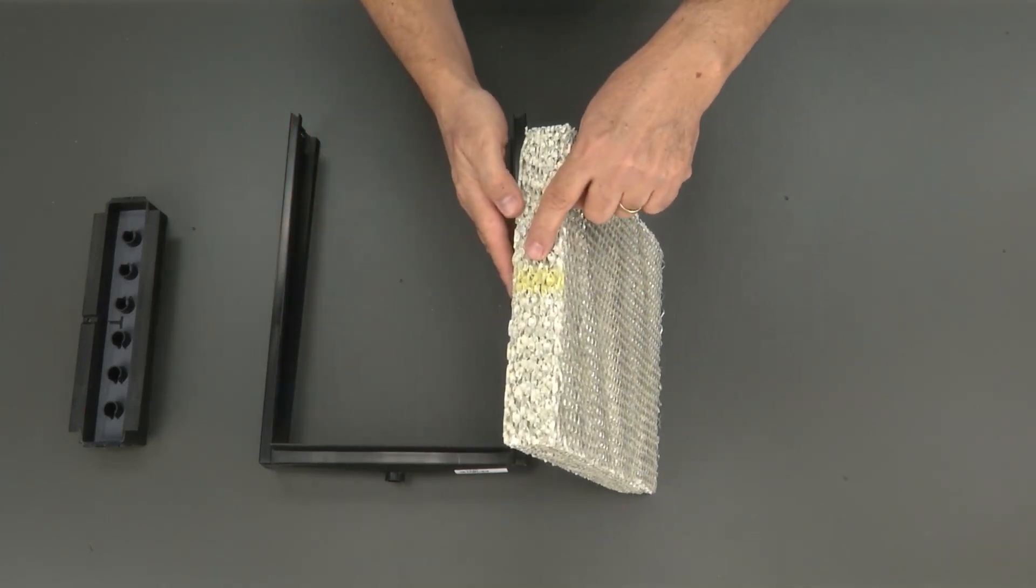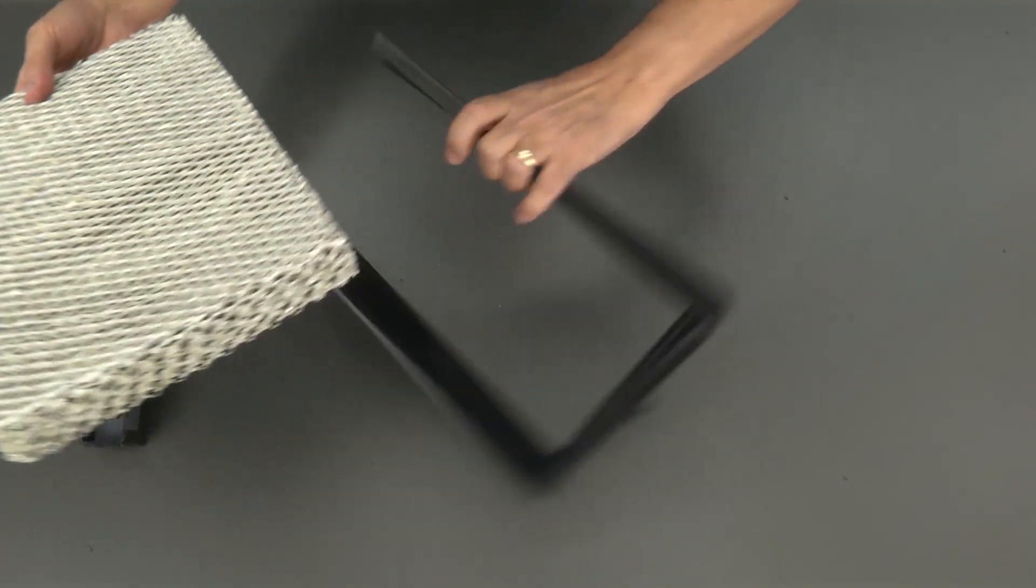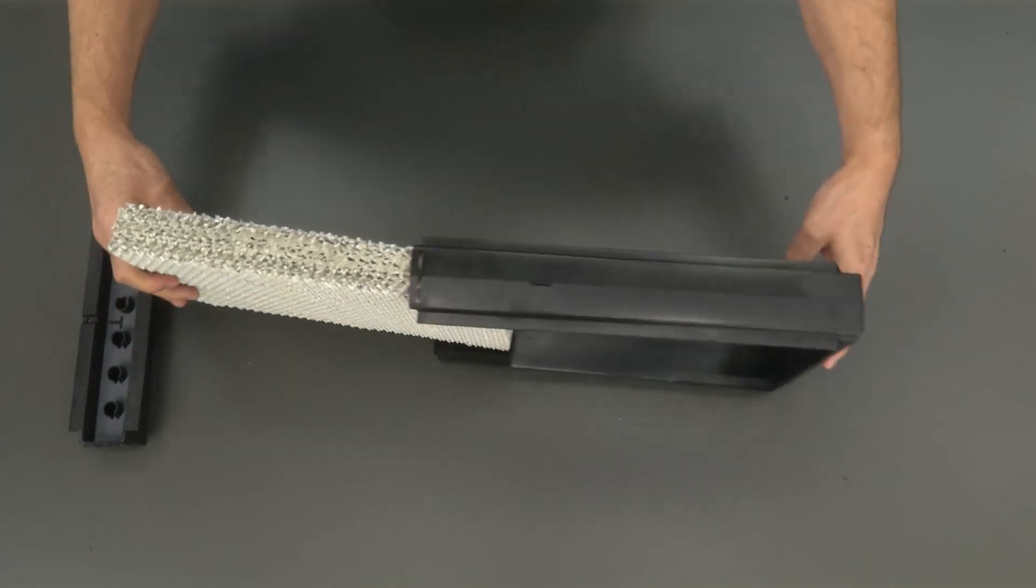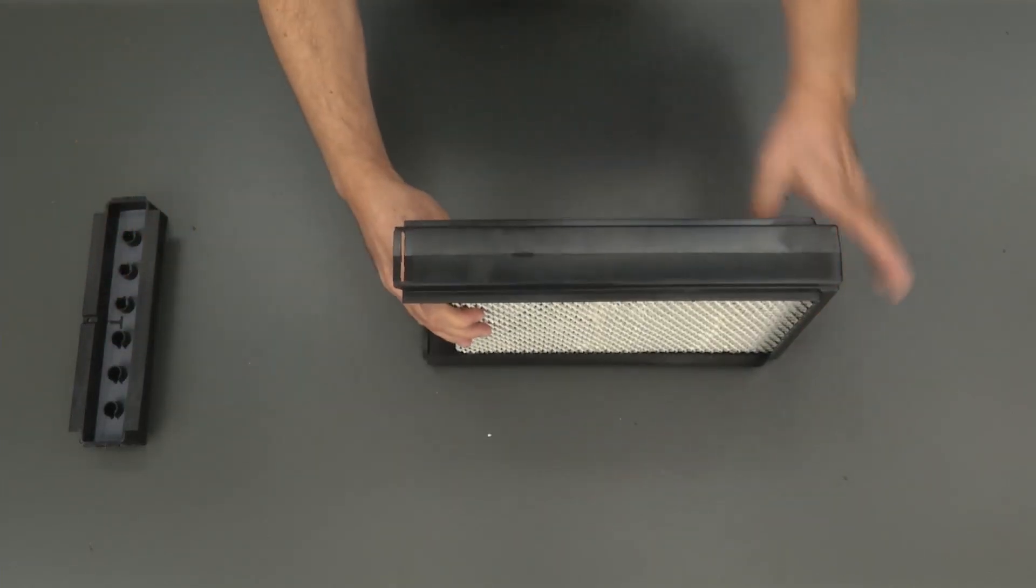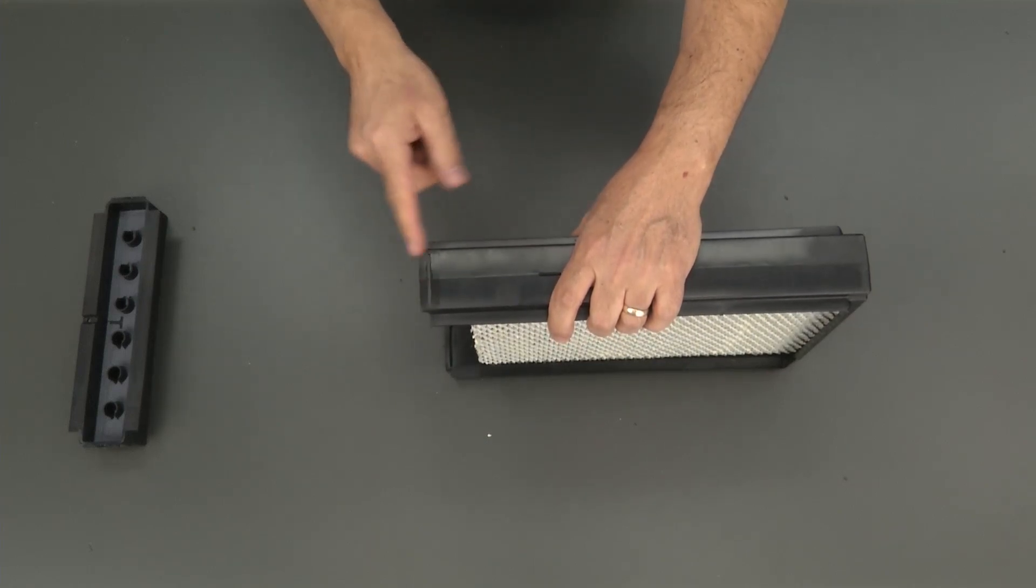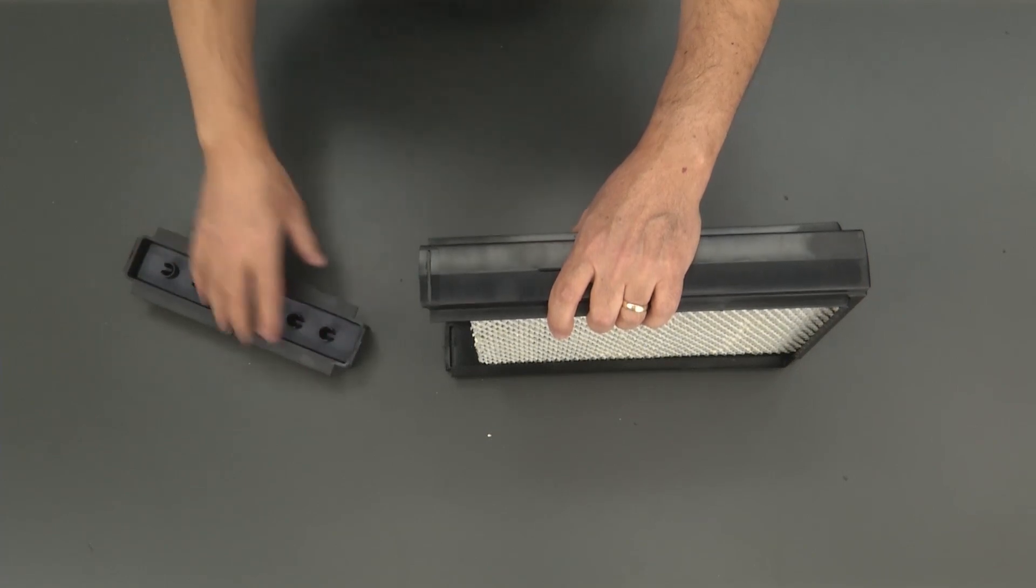You'll notice one edge of the water panel has a spray paint mark that indicates the top. Let's slide this together. Now this particular scale control insert has notches cut into it. Those notches line up with the tabs on the distribution tray.